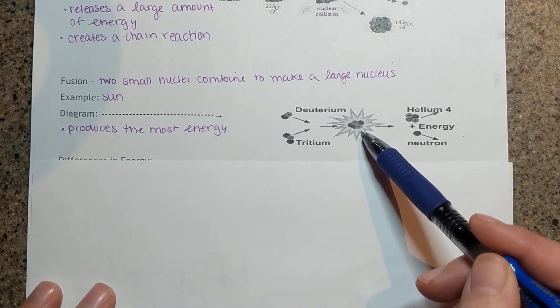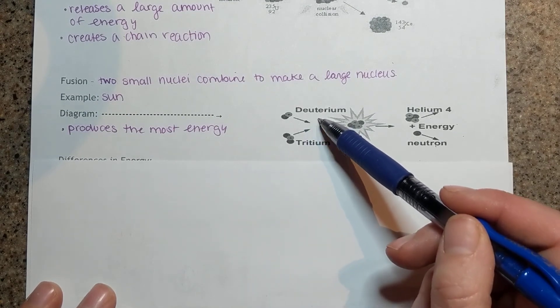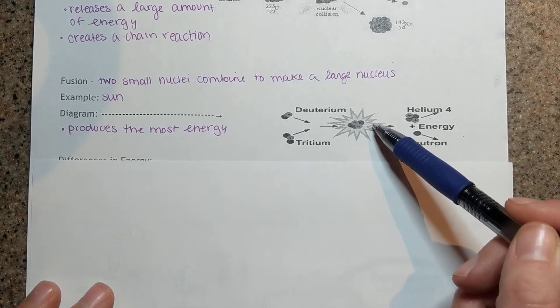And this is how the sun has all of its energy. Once all the tritium and deuterium have fused together, our sun will no longer create energy.